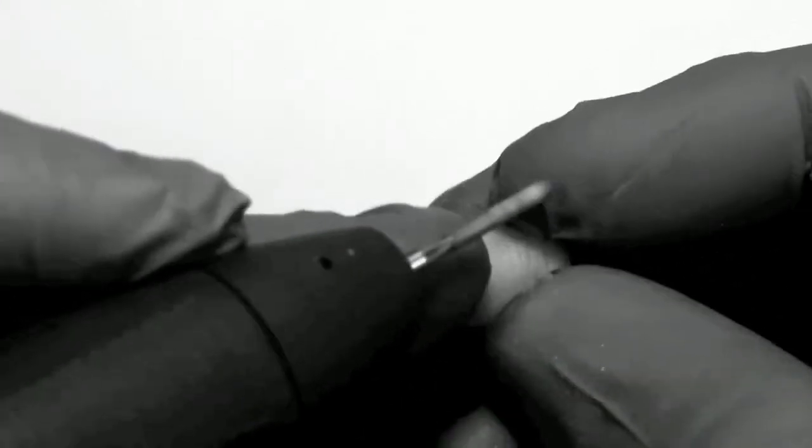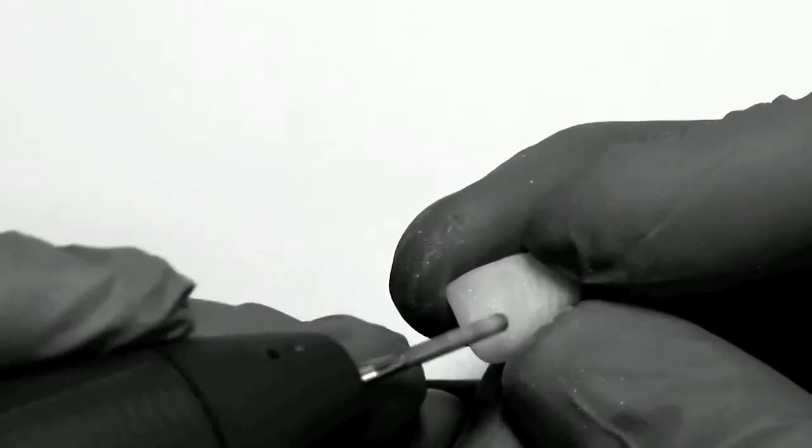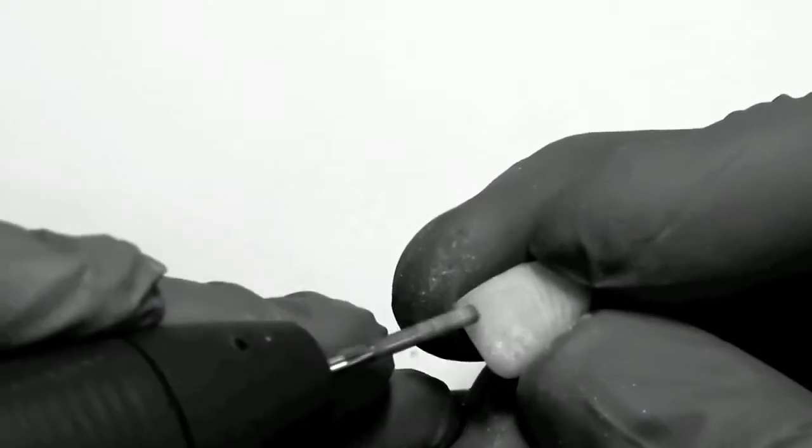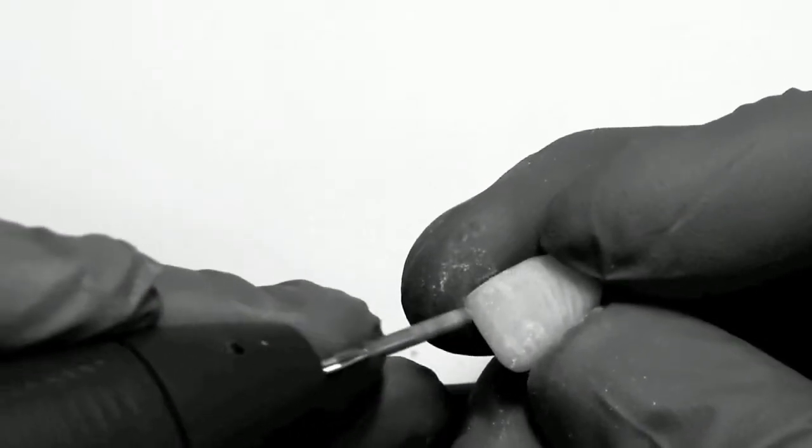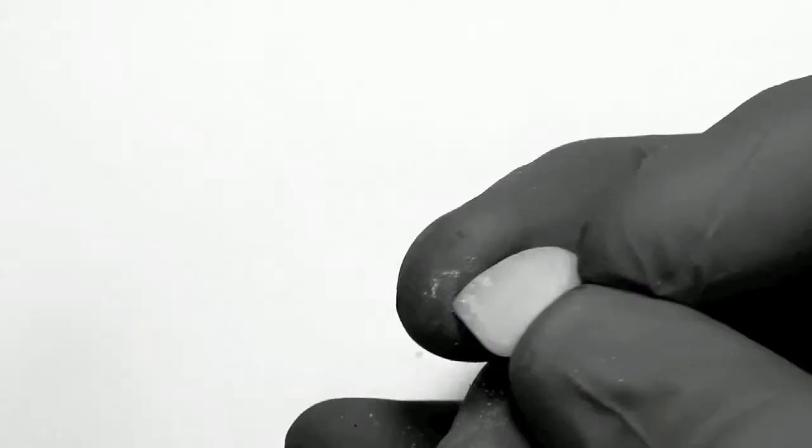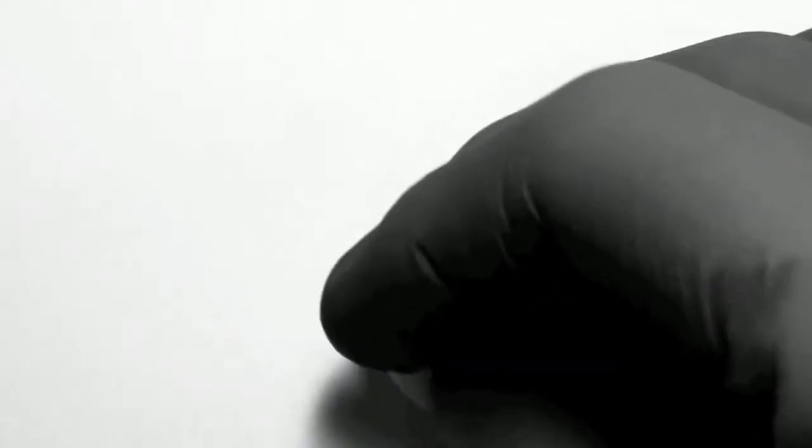Last step, if I want to create more irregularity, I can just tap on the surface of the restoration in some of the areas in the incisal. And that's all the surface characterization that I need to do.